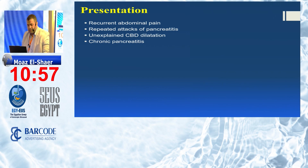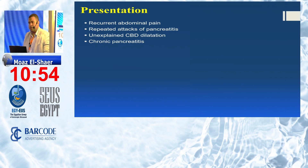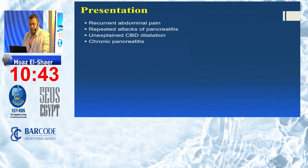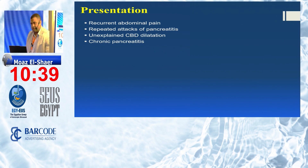What is the presentation of patients with pancreatobiliary maljunction? They might present with abdominal pain, repeated attacks of pancreatitis, unexplained CBD dilatation — which is often an incidental finding — and finally, very late, may present with chronic pancreatitis.